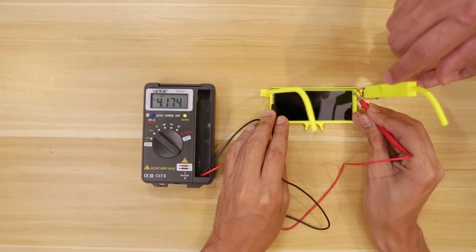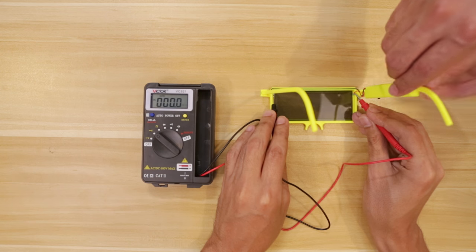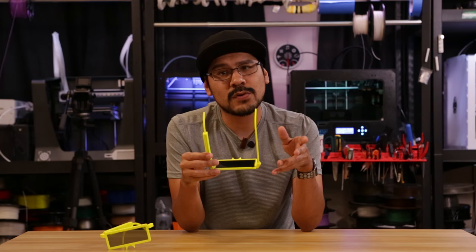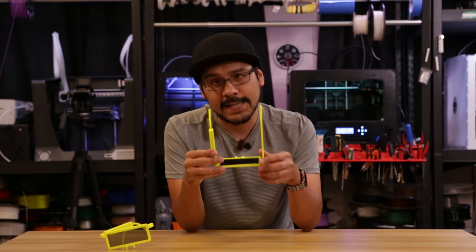When voltage is applied to the electrodes it basically turns dark and filters out bright light. Depending on how much voltage is applied, you can actually control the tint or the opaqueness of the glass.